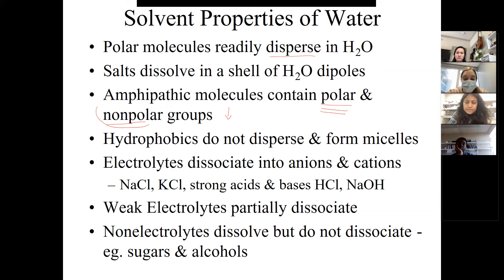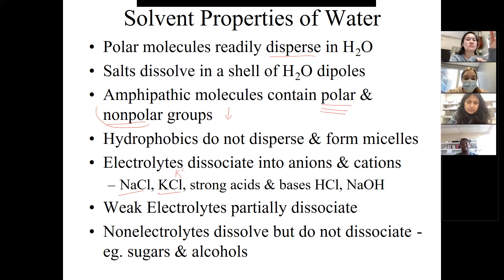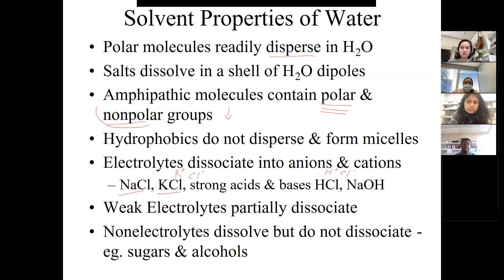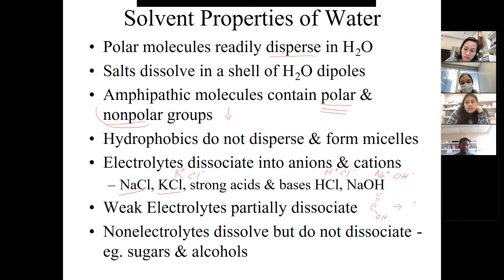Electrolytes in general will dissociate into anions and cations - sodium chloride and potassium chloride will completely dissociate into their charged forms, and water keeps them in solution. Strong acids and bases will do the same thing, producing a proton or a hydroxide. Weak electrolytes will partially dissociate, and this partial dissociation also helps keep the molecule in solution.